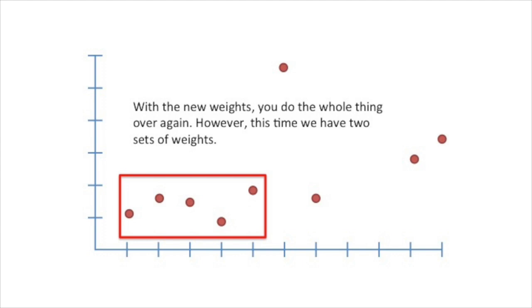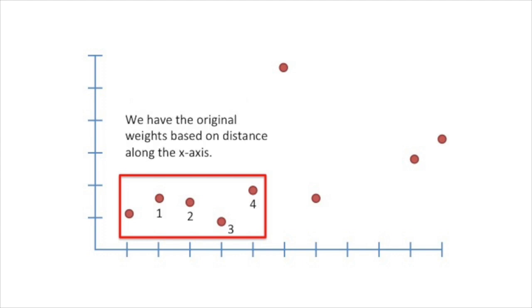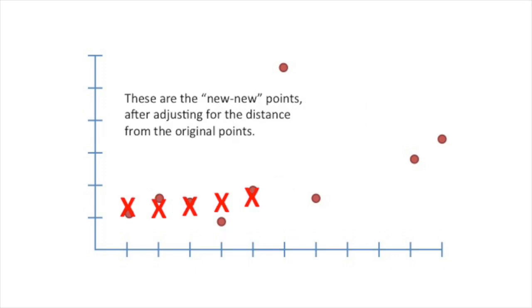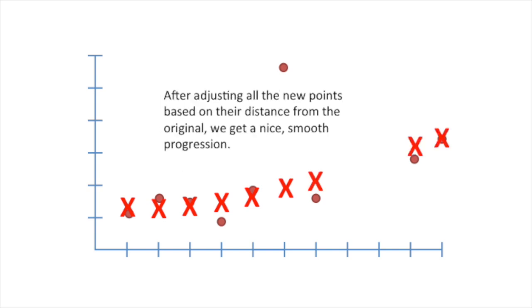We have the original weights based on distance along the x-axis, and the weights based on distance from the new points. These are the new, new points after adjusting for the distance from the original points. The curve is smoother. After adjusting all the new points based on their distance from the original, we get a nice smooth progression.